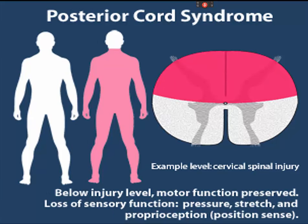Posterior cord syndrome occurs when damage is toward the back of the spinal cord from compression or damage to the posterior spinal artery. This very rare condition typically results in damage to the dorsal columns, causing loss of proprioception, while pain, temperature sensation, and motor function below the level of lesion remain intact. The patient may retain good muscle power and pain and temperature sensation but have difficulty coordinating movement of their limbs, and this is often associated with cervical hyperextension injuries.